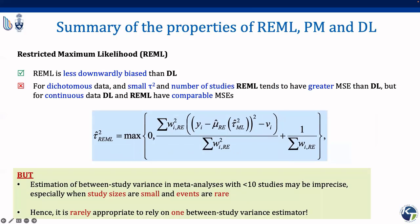The REML estimate is produced by setting the derivative of the restricted log-likelihood function equal to zero and solving for tau-squared. Simulation studies show REML is less negatively biased than DL and is recommended for continuous data, though it has greater mean squared error. Overall, REML has been shown to yield better estimates than DL in meta-analyses with characteristics similar to those found in Cochrane reviews. A limitation of REML is that it is an iterative method requiring numerical maximization, and scoring algorithms fail to converge in a small number of cases. All methods decrease bias as the number of studies increases; however, with few small studies and rare events, no single method is uniformly best.